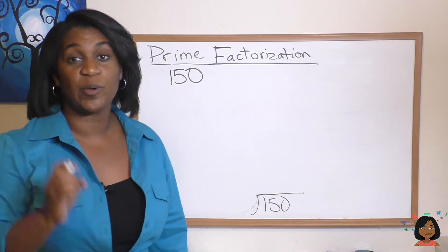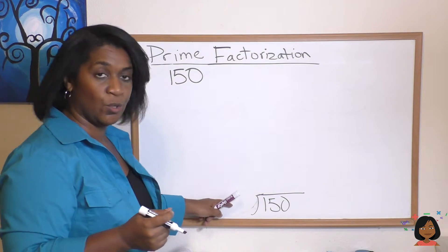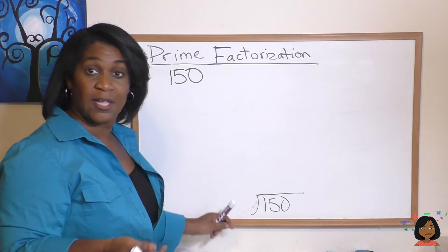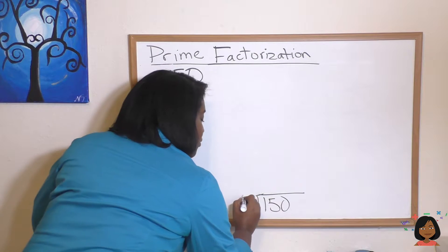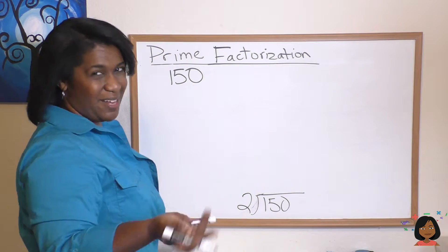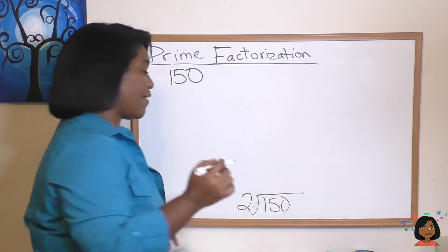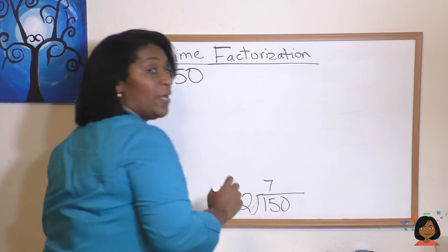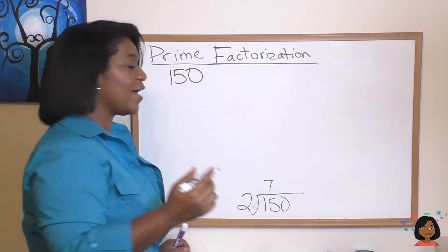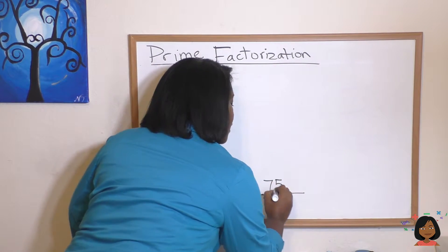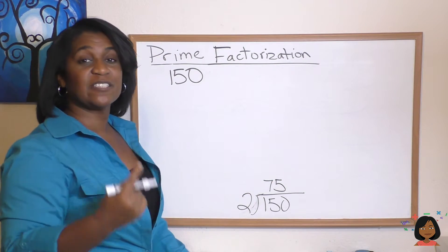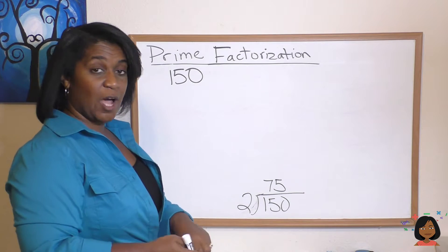150 under my division bar. And I'm going to start with the first prime number. I'm going to say, does 2 go into 150? And it does. So we're going to do the mental math and figure out the division. 2 goes into 15 seven times. 1 is left over. And then 2 goes into 10 five times. So that's the first layer of my division by primes. And then I go again.